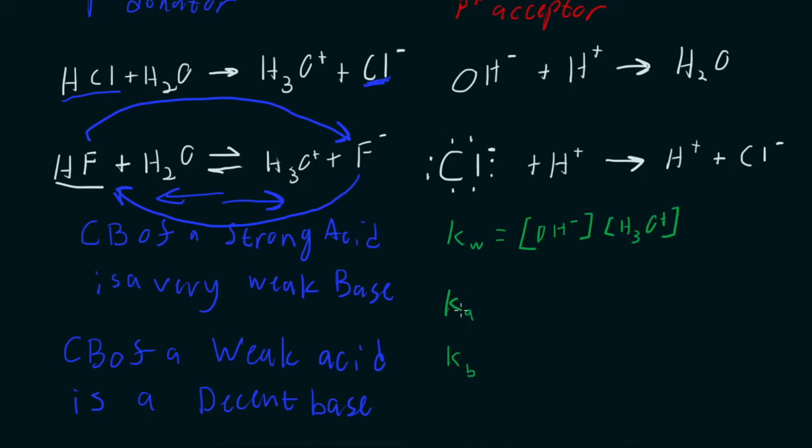What's happening here? Well, what we're trying to do with K is create a ratio of how much of our acid broke up into the products and how much stayed as the reactants. So what we're doing is making a ratio.